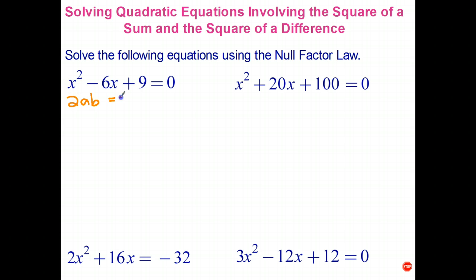Well, 2 times a is 2x. b is 3. 2x times 3 is 6x. So it does fit the pattern. So that means I can rewrite that expression on the left as a square of a difference. x minus 3 all squared equals 0.